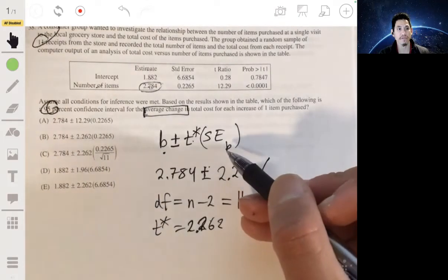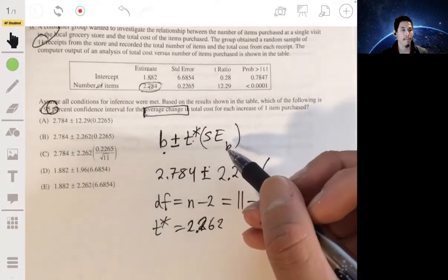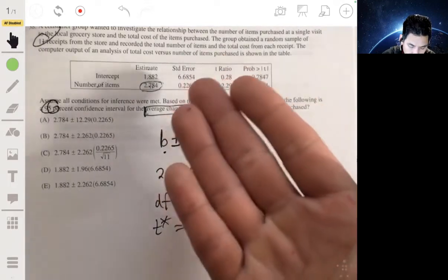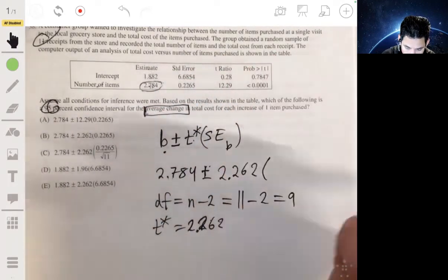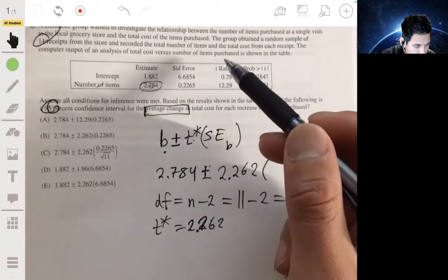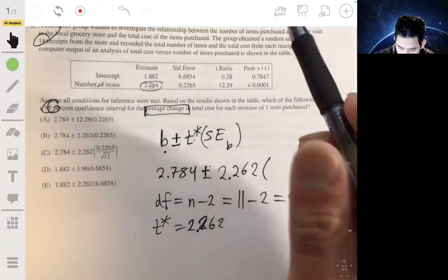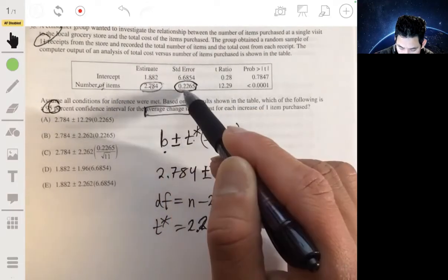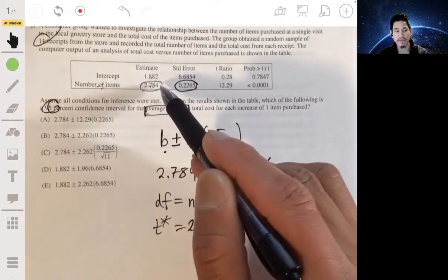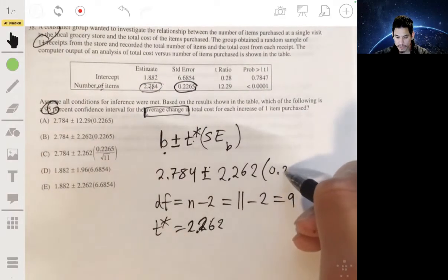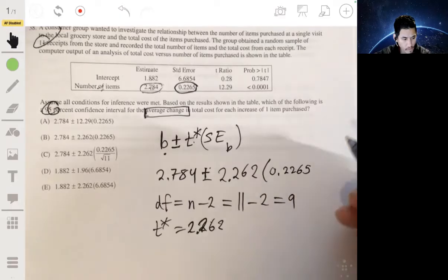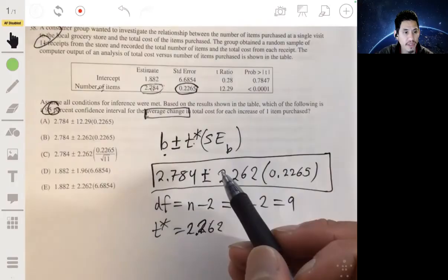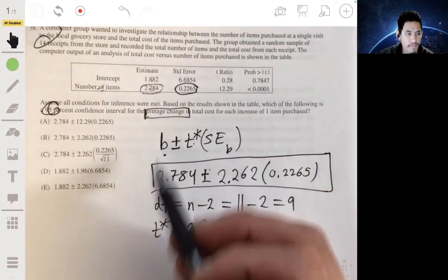And now our standard error for the sample slope B. So we want to now look, what do we have to, which of these values would that be? Again, this is just really making sure you know how to interpret this stuff. And it would be this because we're looking at this row. We're looking at the standard error for the estimated slope. So this would be 0.2265. And so the answer would be B.